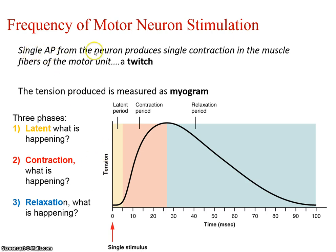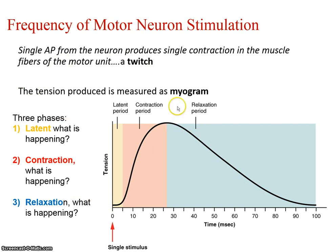A single action potential produces a single contraction, and we refer to this as a twitch — which is different than what you might think of as a twitch. This measure of the tension that is produced is called a myogram, which is just a measure of the functioning of the muscle.